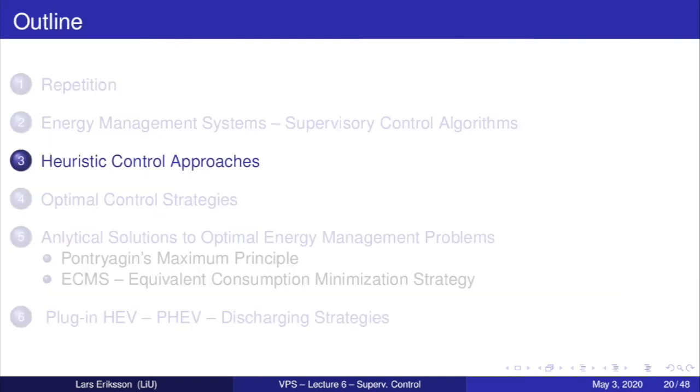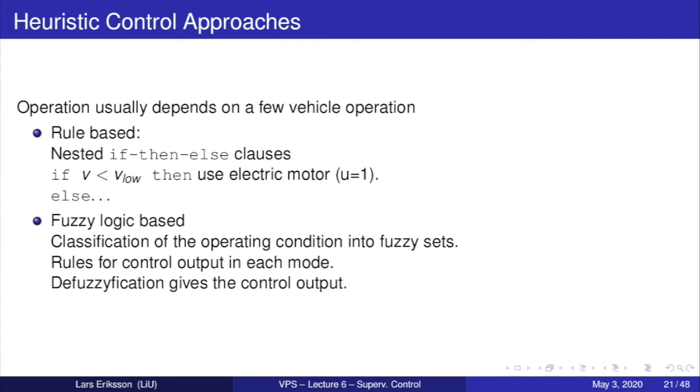So now we come to heuristic control approaches, which is more or less state of the art in production vehicles right now. The operation of the heuristic controllers is that they usually depend on a few vehicle operation variables. Then they are rule-based, so they are often nested if-then-else clauses. For example, if velocity is smaller than a low threshold, then use the electric motor, for example while launching the vehicle from a traffic light, and then else you have another condition. They can also be fuzzy logic-based. So you have classification of the operating condition in fuzzy sets and then rules for control output in each mode, and then the classification gives you the control output.